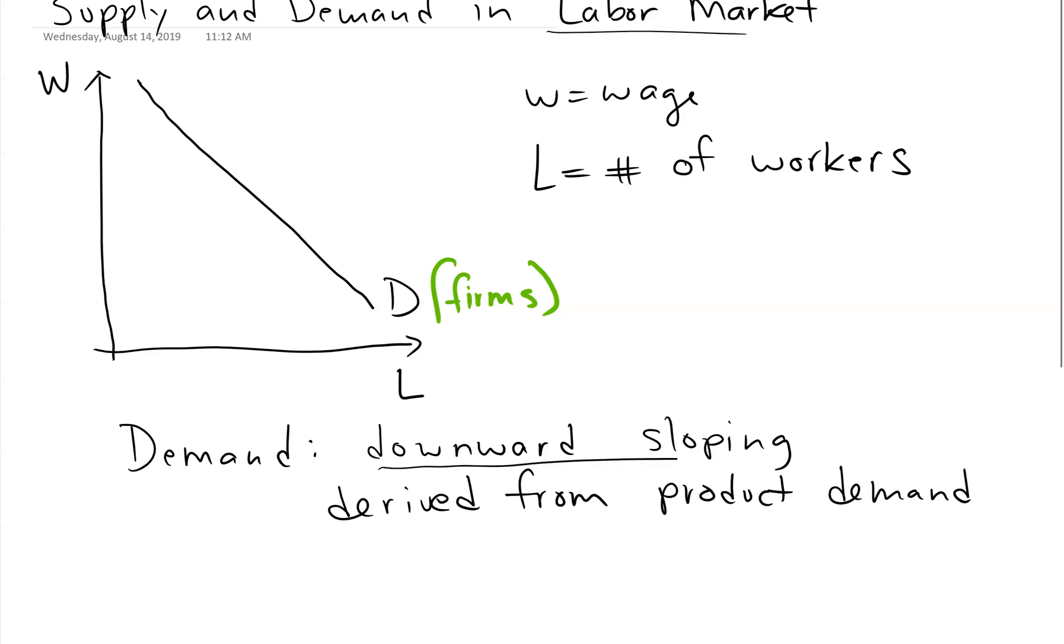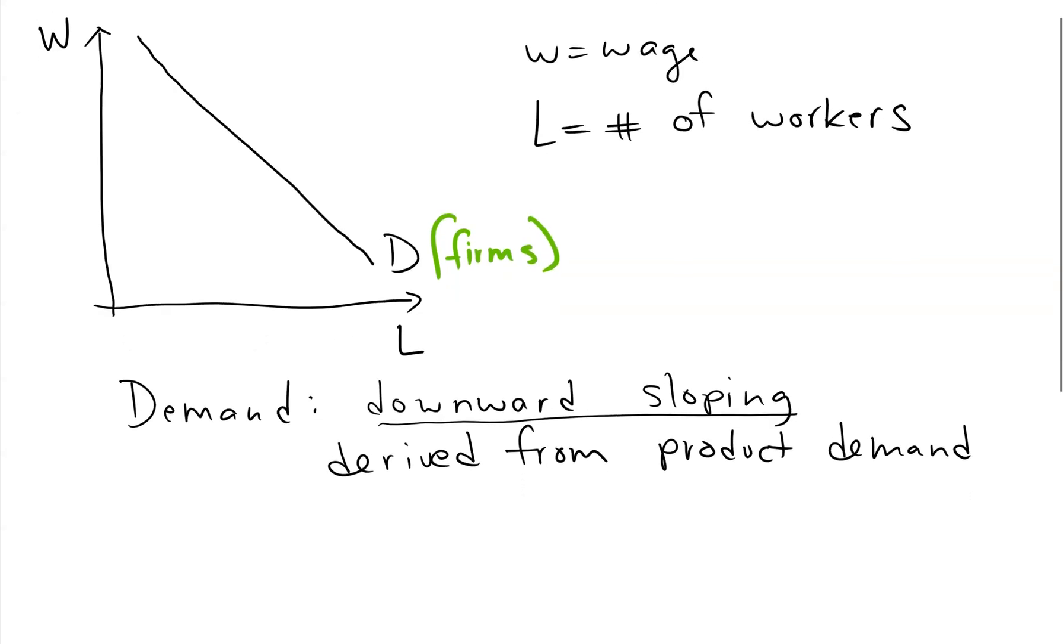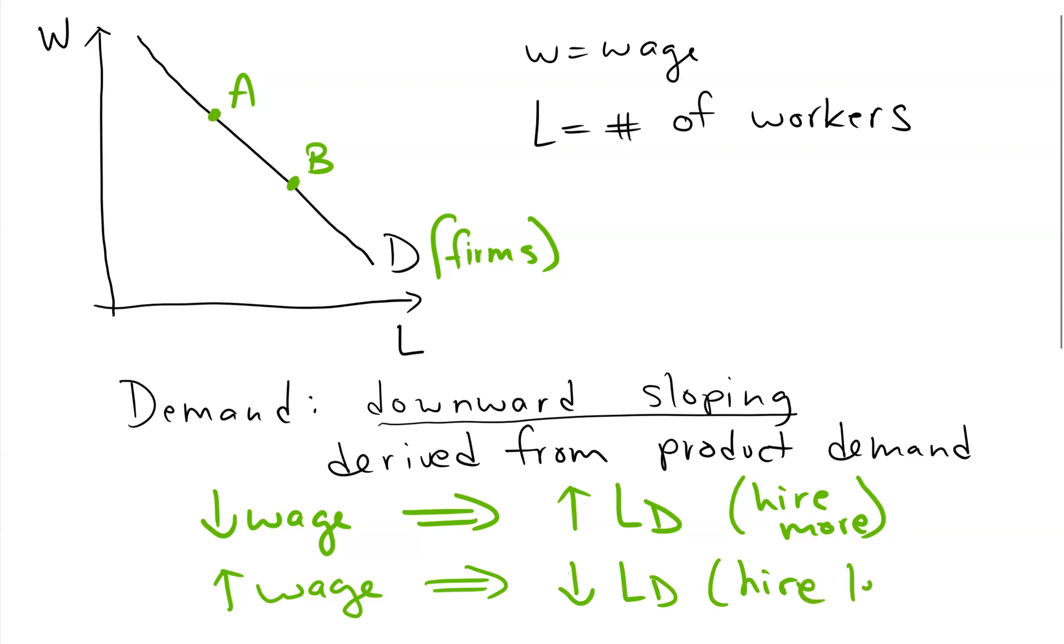Downward sloping just tells us this. If we label a point here like A and maybe B, let's suppose we started at A. If we lower our wage, then the firms are going to demand more labor. They want to hire more because it's going to be cheaper for them to hire more. It seems kind of obvious, but it's actually not as obvious as you might think. And going back from B up towards A, if you raise the wage, they're going to want to hire less. That's what labor demand means, the quantity of labor demanded.